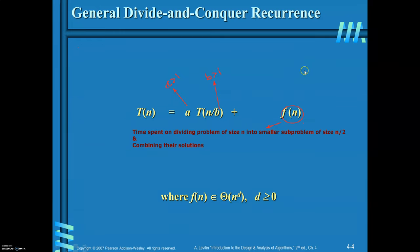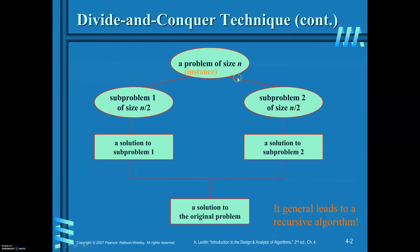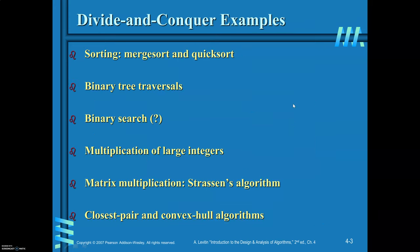This is the general recurrence relation for divide and conquer. As seen in the flowchart, when you divide the problem by 2 you get two subproblems of size n/2. To find the time complexity of a problem of size n, you need to know the time complexity of the smaller subproblem of size n/2. In general, you divide the problem of size n by b, giving subproblems of size n/b, and there are 'a' such subproblems.